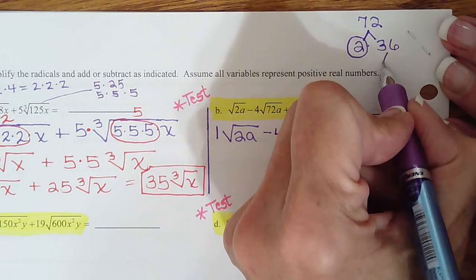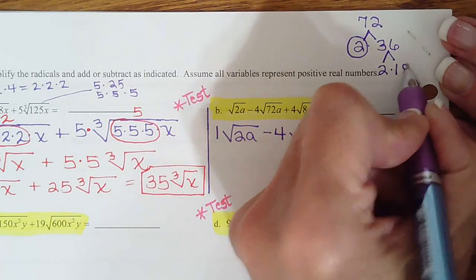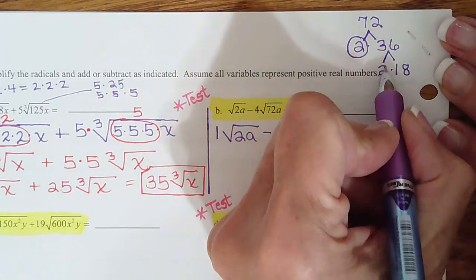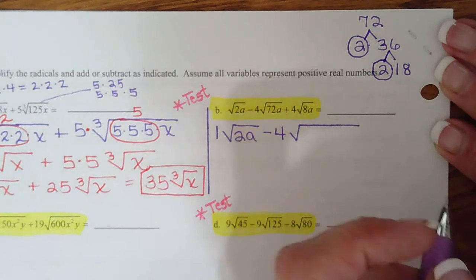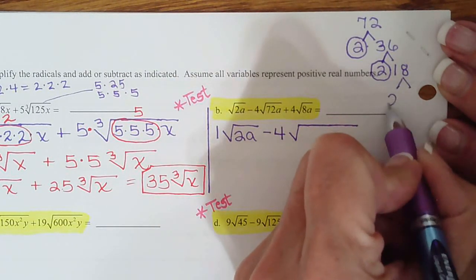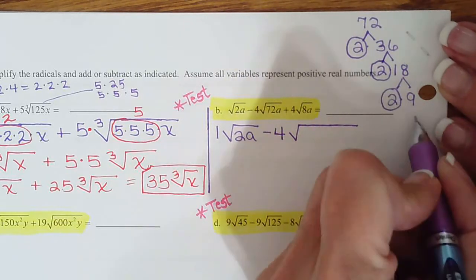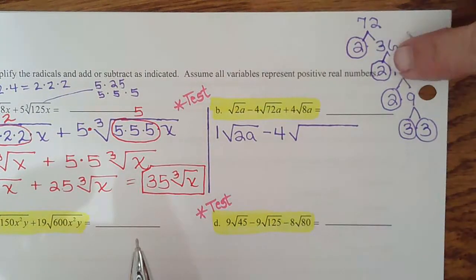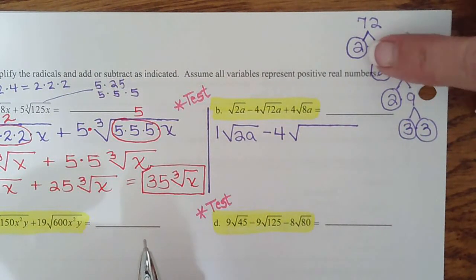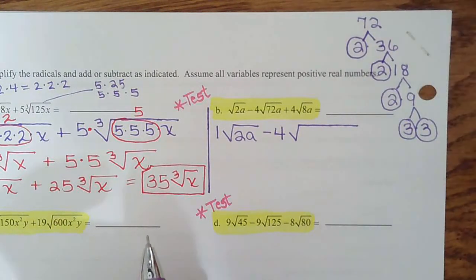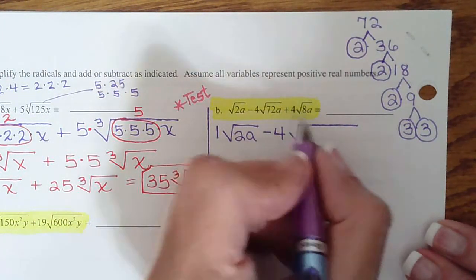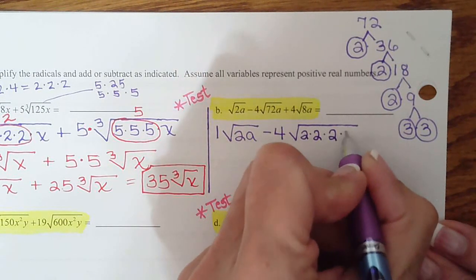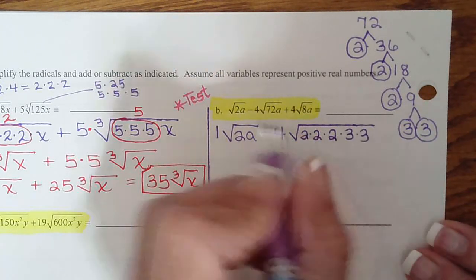So 72 is 2 and 36. I always like one of the numbers to be prime so that I can circle it. And then this would be 2 and 18. And remember if you picked other numbers, 8 and 9 or 4 and 9, we all get the same answer at the end. I just like circling one every time so I keep using 2 until I can't anymore. 18 is 2 and 9. There's another prime. 9 is 3 and 3. So there we go. It's 3 twos and 2 threes. And remember, every single time you get a prime, circle it. Because sometimes you're going to have so many numbers, it's going to be hard to keep track of it. So we have a 2, a 2, a 2, a 3, a 3, and then we have an A.